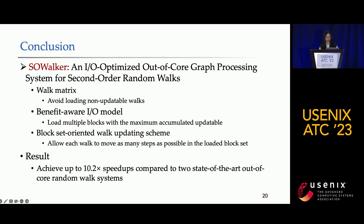In conclusion, SOWorker is an I/O-optimized out-of-core graph processing system for second-order random walks. We implement three main optimizations: the work matrix, the benefit-aware I/O model, and the block-set oriented work updating scheme. Compared to two state-of-the-art out-of-core random walk systems, SOWorker yields significant performance speedups. Thank you for your attention.